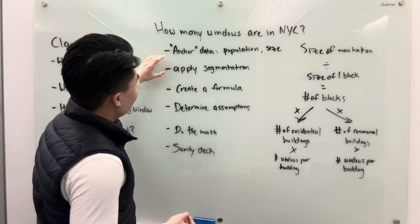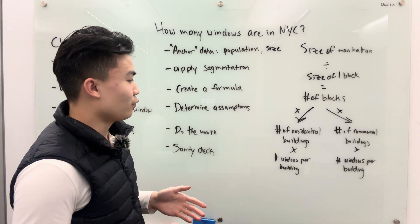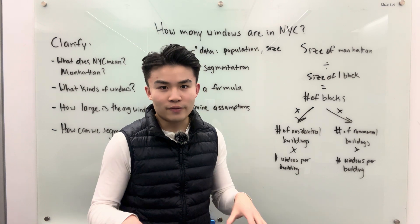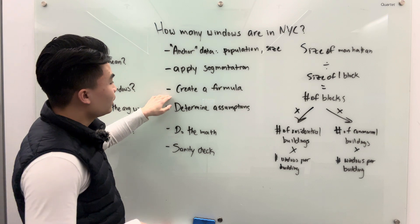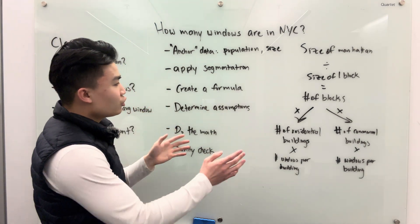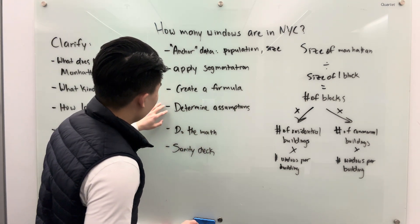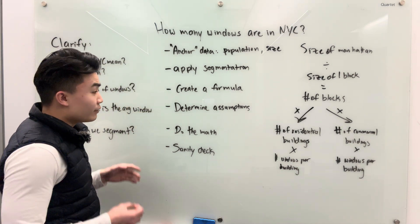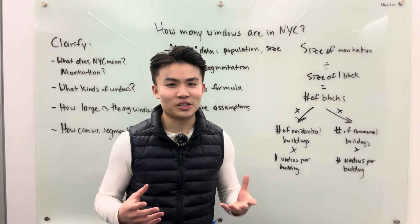What you want to do after that is start applying the segmentation. Segmentation is just a fancy word for how are we going to split up this big number and use it to our advantage so that we can figure out how many windows are in New York. You want to create a formula, and this formula is going to involve coming up with certain assumptions. As you're making the formula, don't worry about what the assumptions are — we'll come back to that later. Eventually we'll do the math. The last step is we want to do a sanity check. Now let me walk you through an example of how I would actually do this.